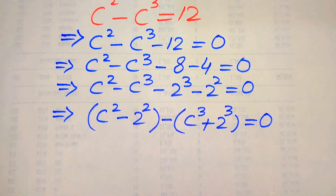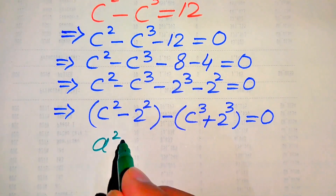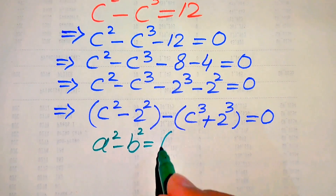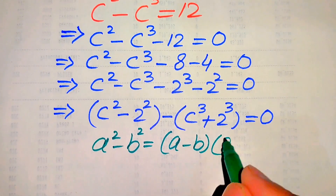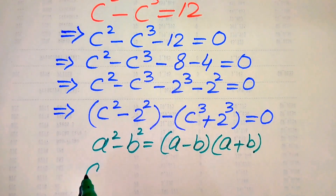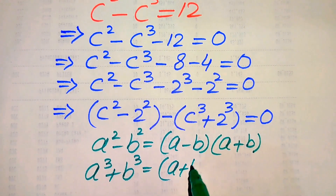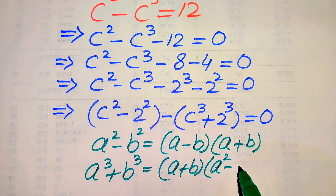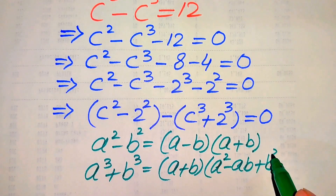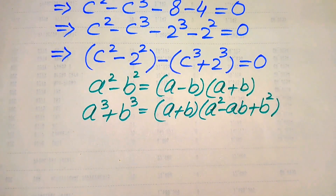To solve further we need two formulas. First, the difference of squares: a squared minus b squared equals (a minus b)(a plus b). Second, the sum of cubes: a cubed plus b cubed equals (a plus b)(a squared minus ab plus b squared). We apply both of these to the equation above.